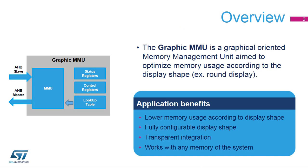The CHROM GRC is a graphic-oriented memory management unit to optimize the memory usage according to the display shape. It lowers memory usage by storing only the visible pixels in memory. It is fully configurable according to the display shape, totally transparent in the system, and works with any memories and any masters of the STM32.